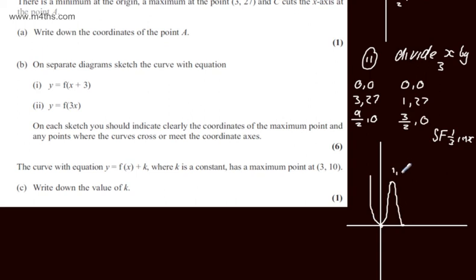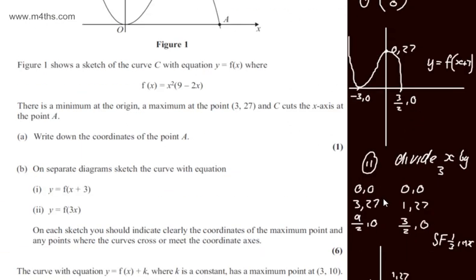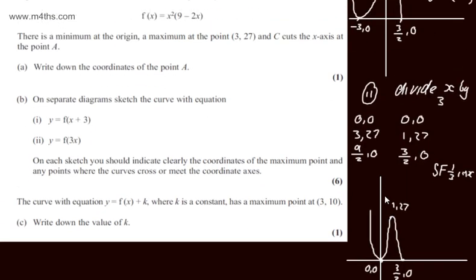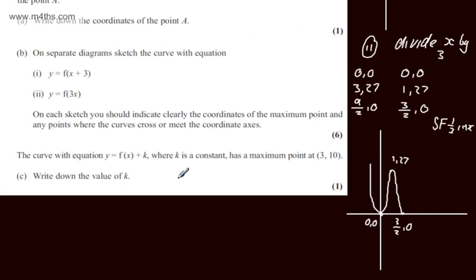So we can put on 1 comma 27, we can have 0, 0, and we can have 3 over 2 comma 0. So all I've done is show now a scale factor stretch of 1 third in the x direction.